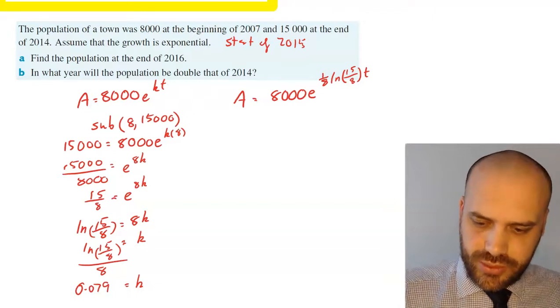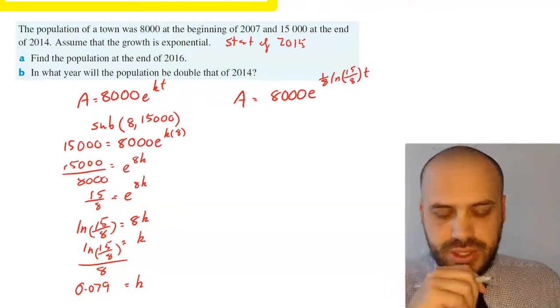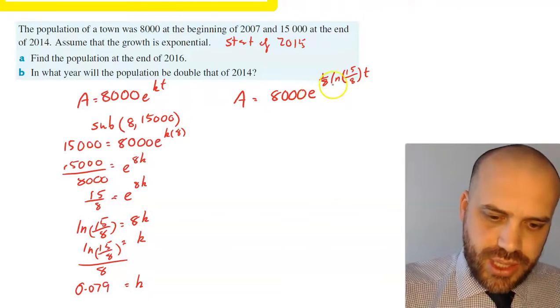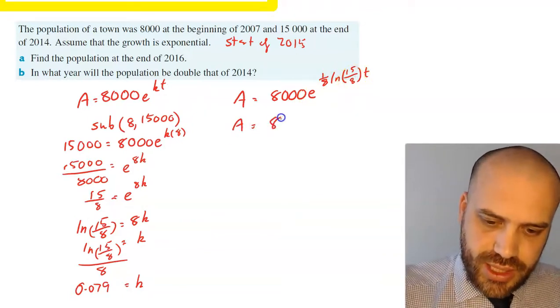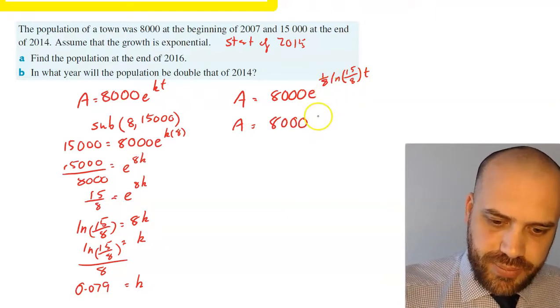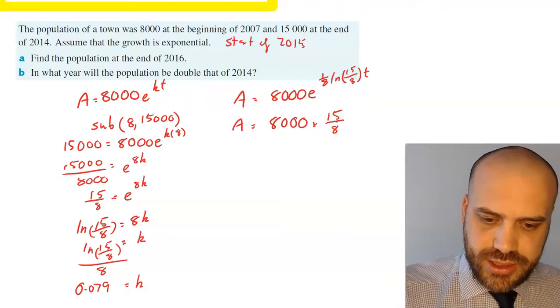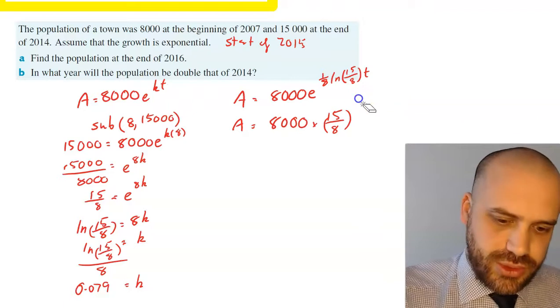Now this is a perfectly acceptable answer, but you can see we have e being raised to a natural log. So we can rewrite that as 8000 times (15/8)^(t/8).